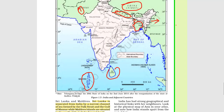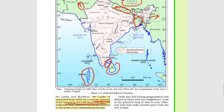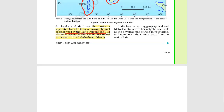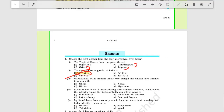A special point: Sri Lanka is separated from India by a narrow channel of sea formed by the Palk Strait and the Gulf of Mannar — this is a very important fact. That was all about this chapter. Thank you so much for watching this video.